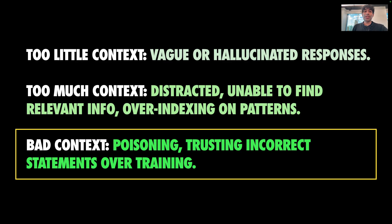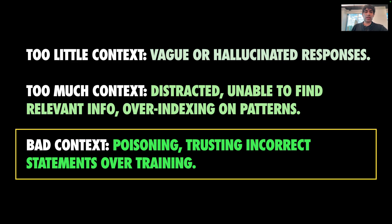Worst of all is bad context — this can poison the AI, making it trust wrong information in the prompt over its more accurate training. For example, an agent might fixate on an old conversation thread and ignore better approaches if you've iterated toward a better starting point. We sometimes call that the two steps back problem. In coding agents, this leads to buggy outputs or stuck loops. Recognizing those pitfalls is really the first step to better engineering.